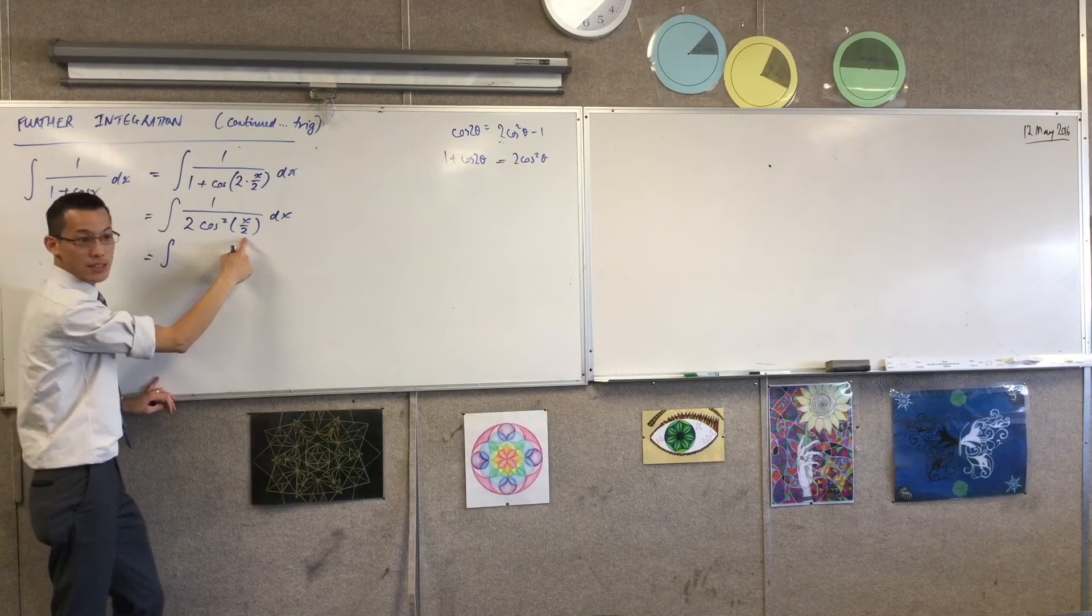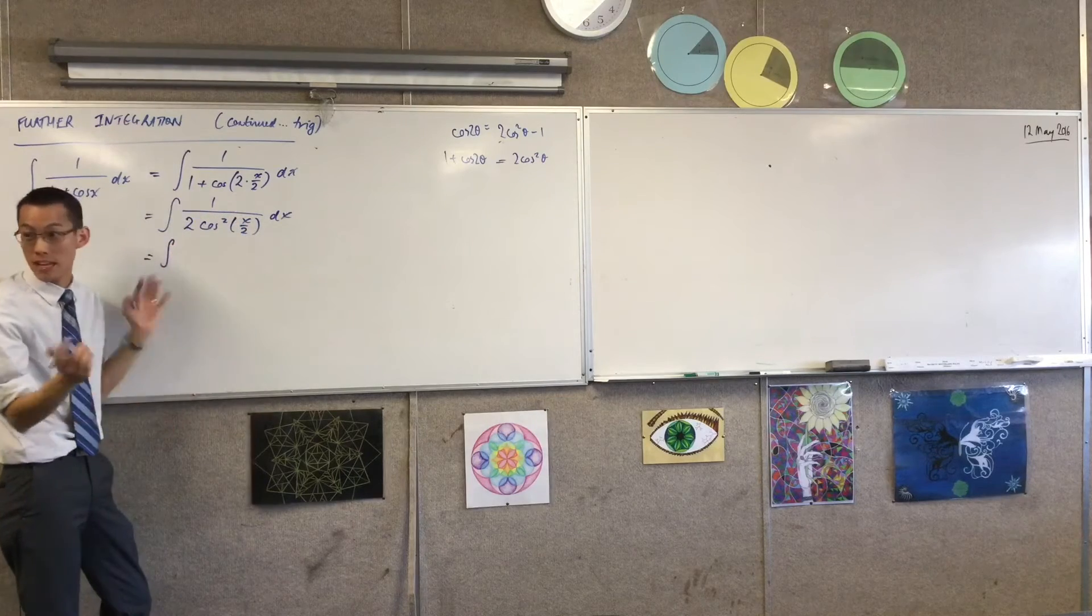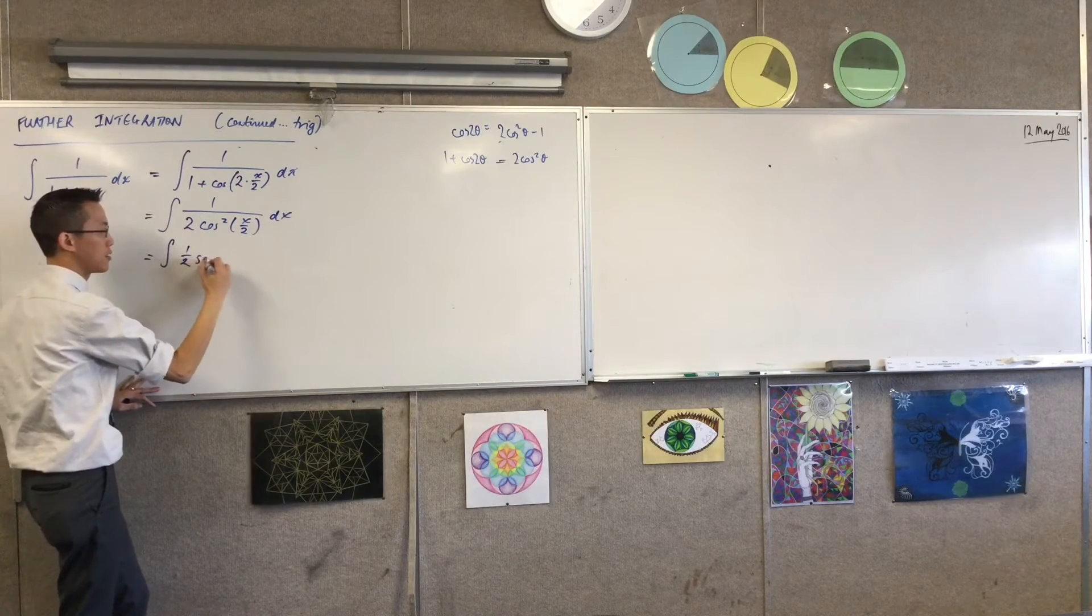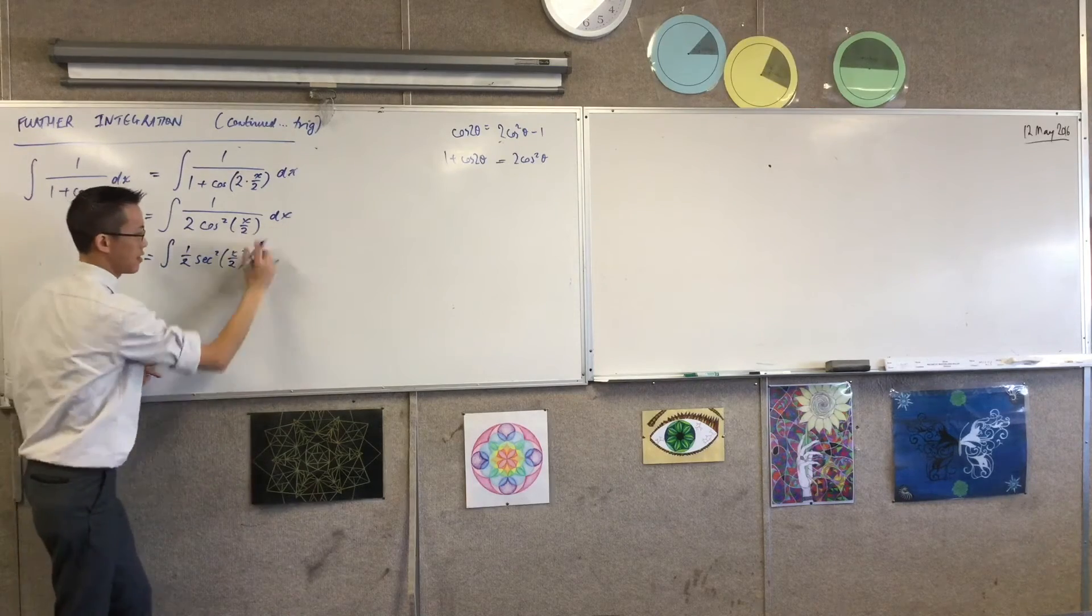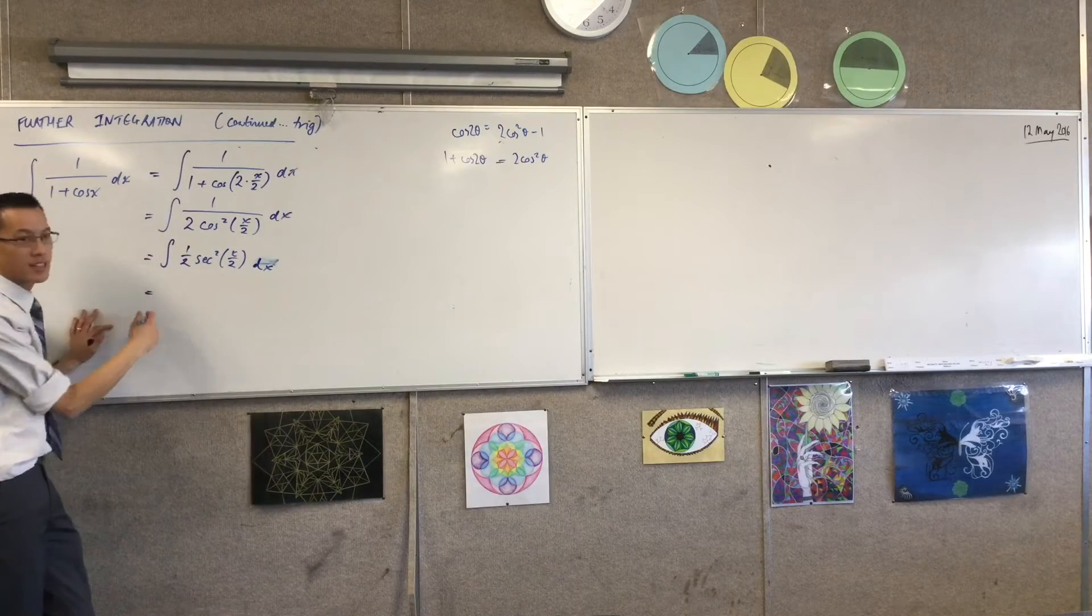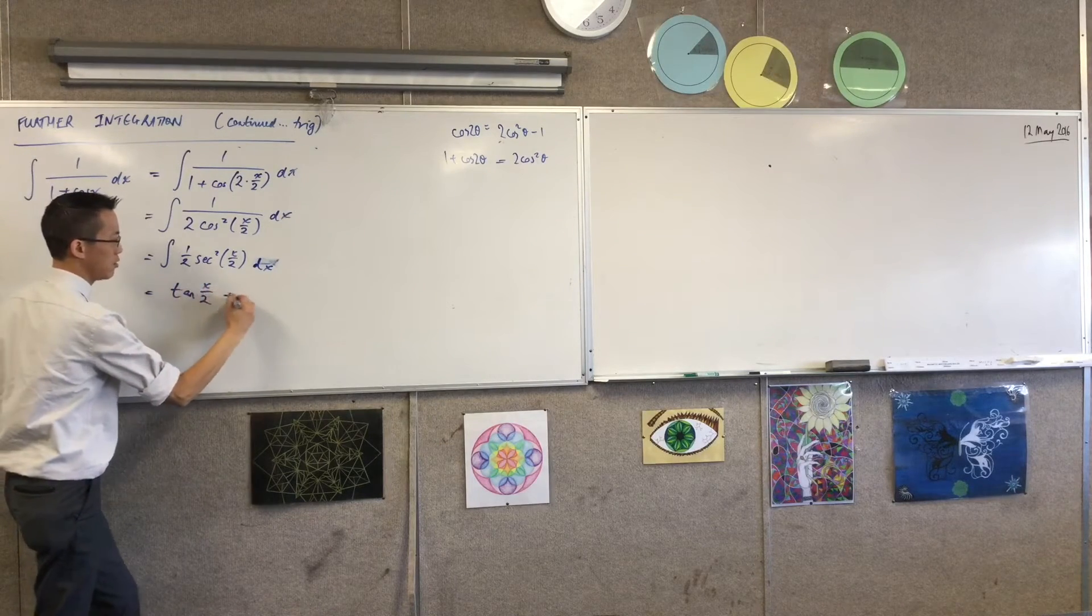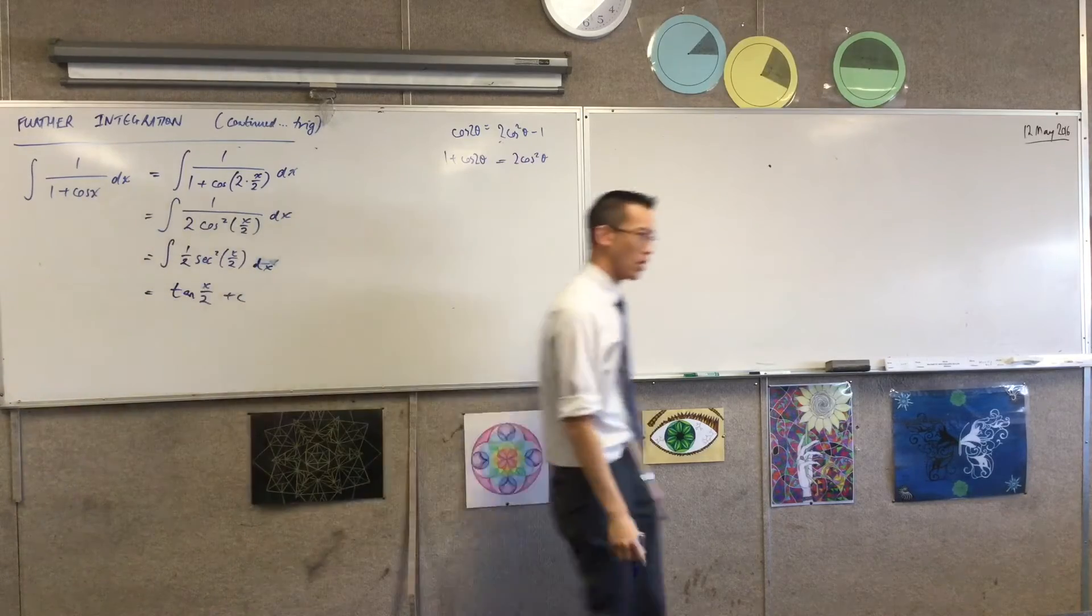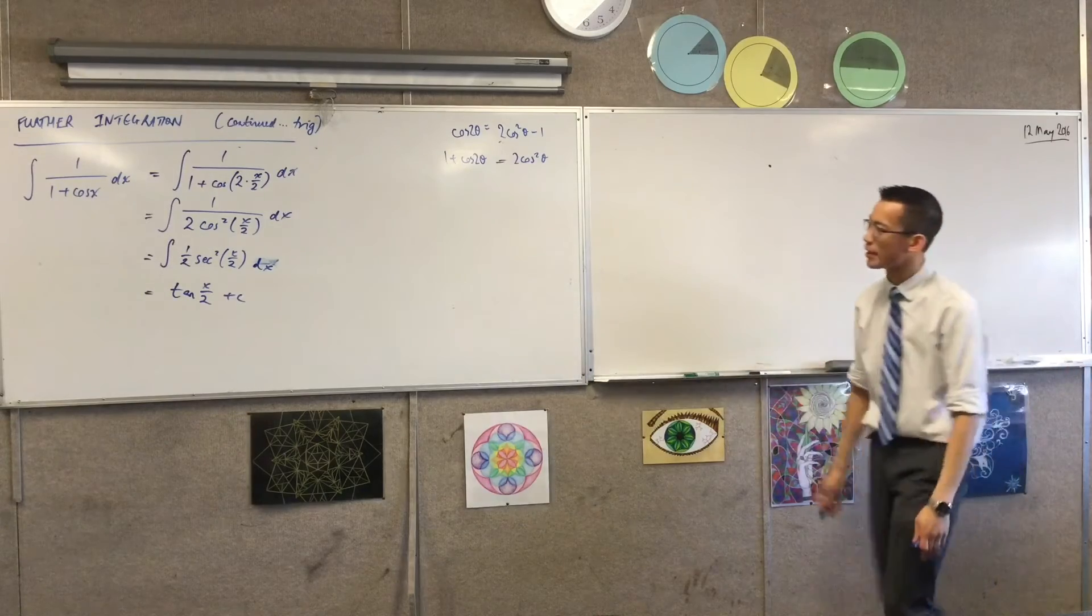That means I want the derivative of the inside function, which is a half, which I have in there. So I might as well just let it stay put. A half sec squared x on 2. And now you can see, great, that's about as standard as it gets. That's tan of x on 2 plus a constant. Obviously there's no harm if you took that half out, but then you're like oh we're going to have to put the half back in and they cancel.